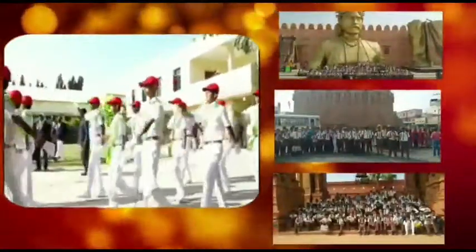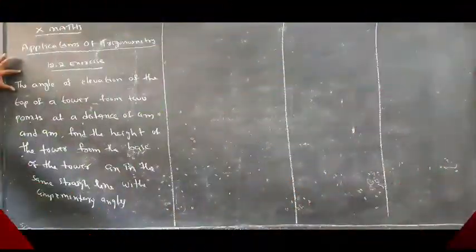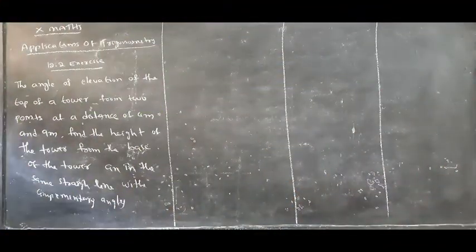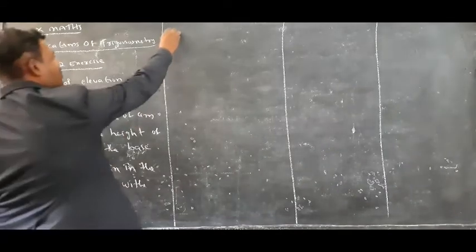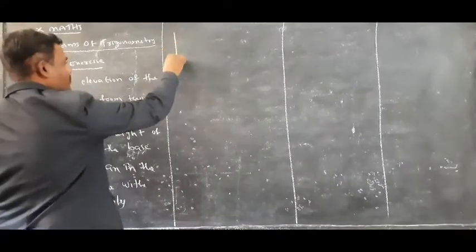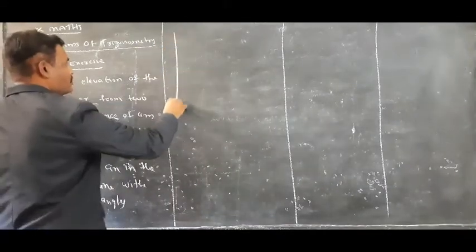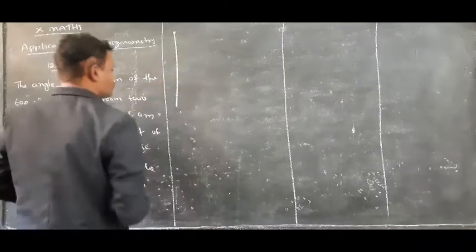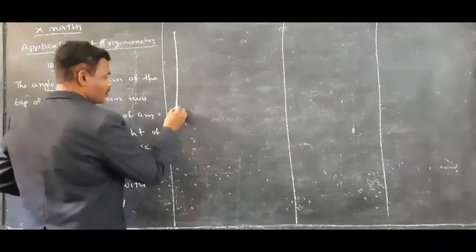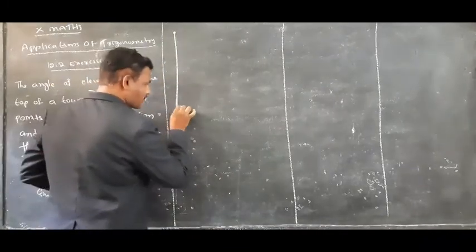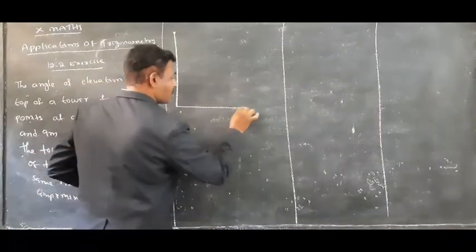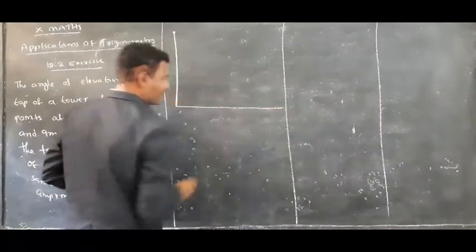I am going to explain 12.3 exercises. Here is the elevation from the top of a tower. One tower is there, and from the top of the tower to the base of the tower, one straight line is there.